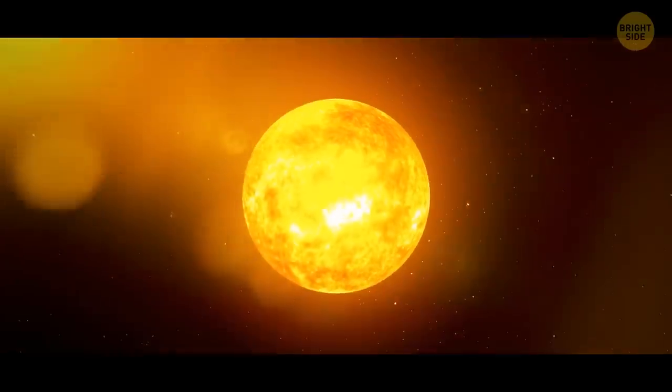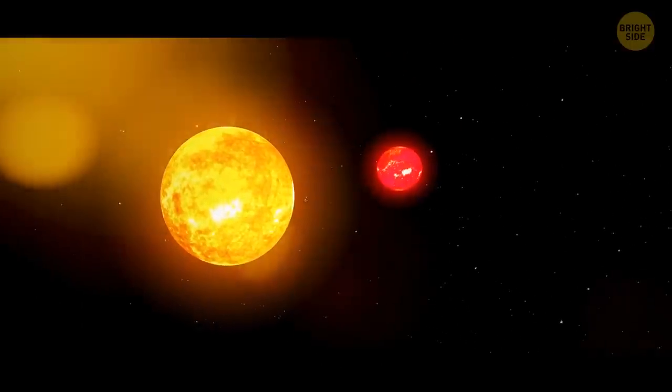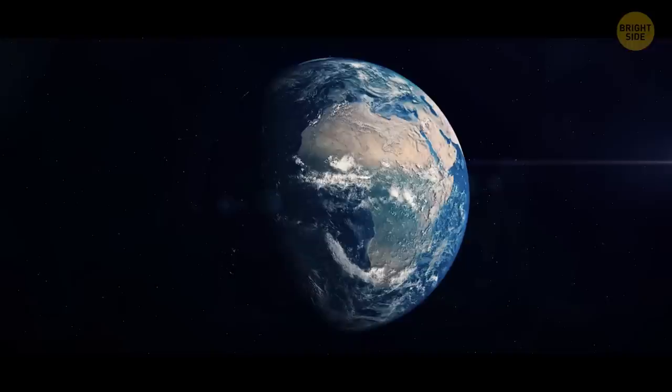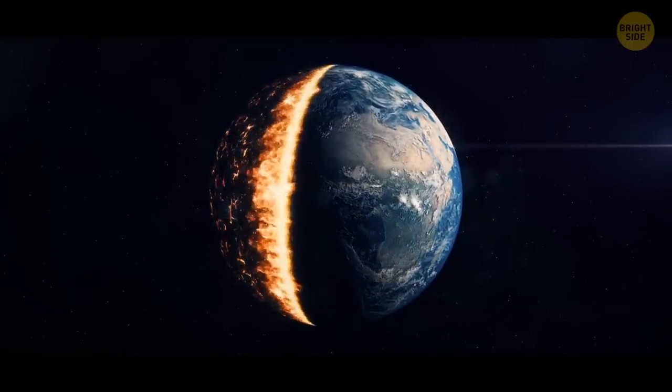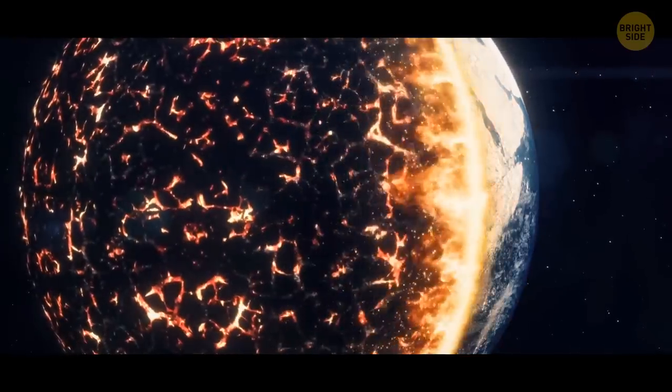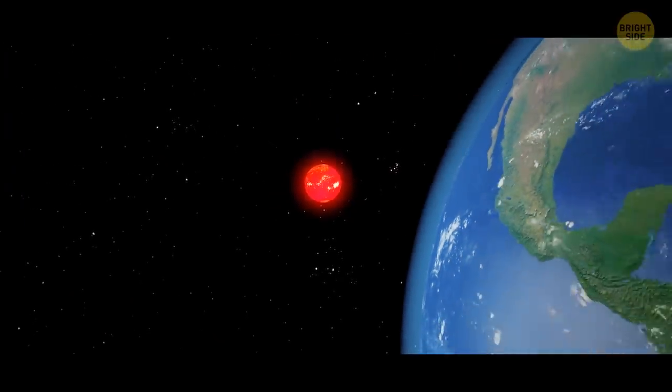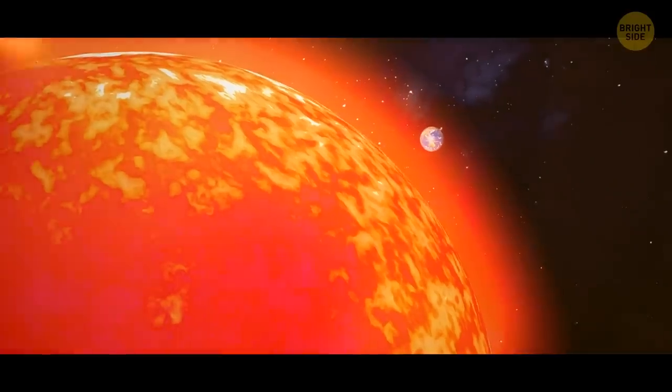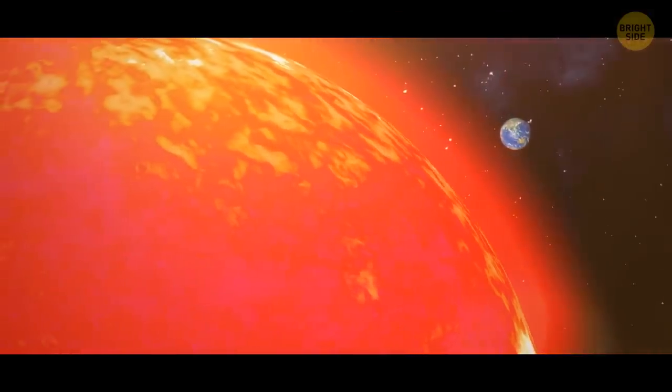Scientists even suggest that our sun wasn't always lonely. It could have had a companion star called Nemesis. They've noticed that mass extinctions on Earth occur every 27 million years. It's like a cycle. So they turned to the stars to find out what the reason might be. And then, they assumed that it was a star that left our sun a long time ago. But it still affects us.